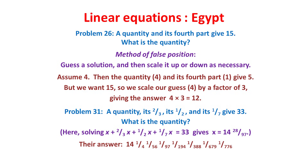Problem 31 is much more complicated. Using our algebraic notation, we can solve it to give the answer 14 and 28 over 97. On the papyrus, they gave their answer in terms of unit fractions of the form 1 over something, as 14 plus 1 over 4 plus 1 over 56, and so on, illustrating the amazing facility they had when calculating with these unit fractions.